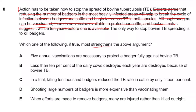The conclusion is: the only way to stop bovine TB spreading is to kill badgers. Now we need to find which option strengthens that. Option A: five annual vaccinations are necessary to fully protect a badger against bovine TB — five vaccinations is quite a lot in terms of money and effort, so you might as well kill them. That strengthens the argument. Option B: less than 10% of dairy cows are destroyed each year because of bovine TB — that highlights it's not really a big problem, which would actually weaken the argument.